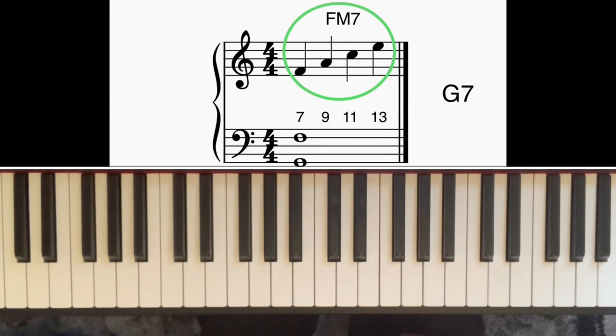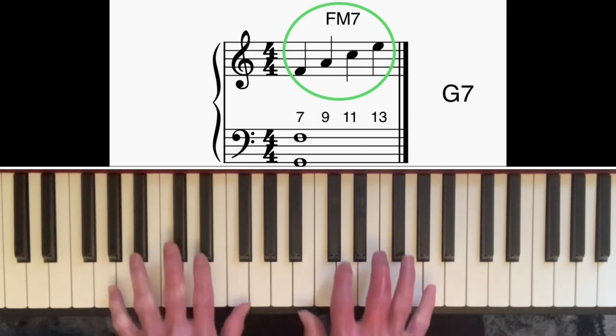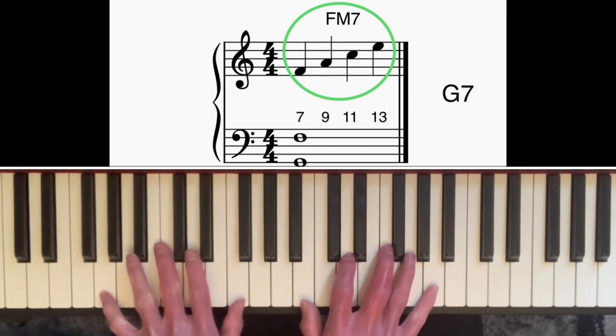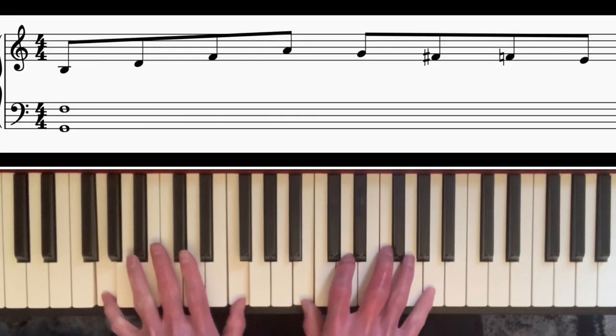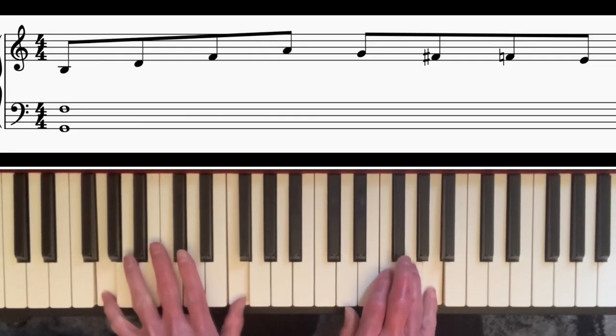So what I'm going to do first is patterns where I play four eighth notes going up an arpeggio, and then four more eighth notes coming down the dominant bebop scale. First one, starting on the third of the G7 chord, and then down the scale.